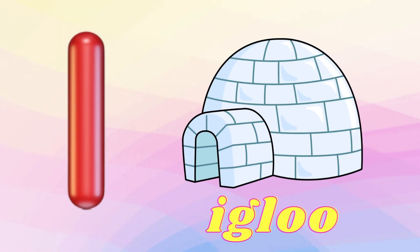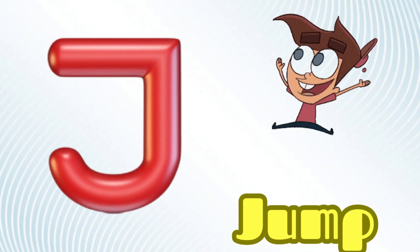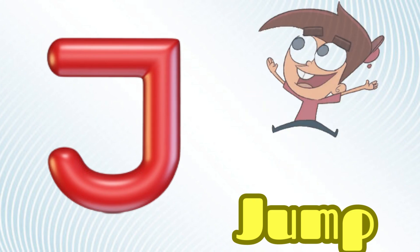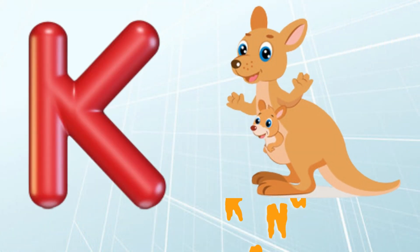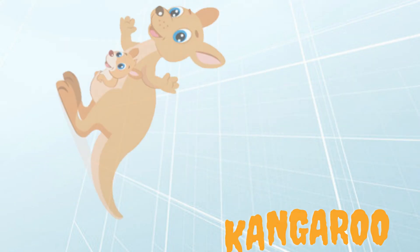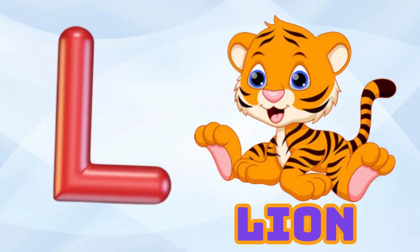I is for Igloo, I-I-Igloo. J is for Jump, J-J-Jump. K is for Kangaroo, K-K-Kangaroo. L is for Lion, L-L-Lion.